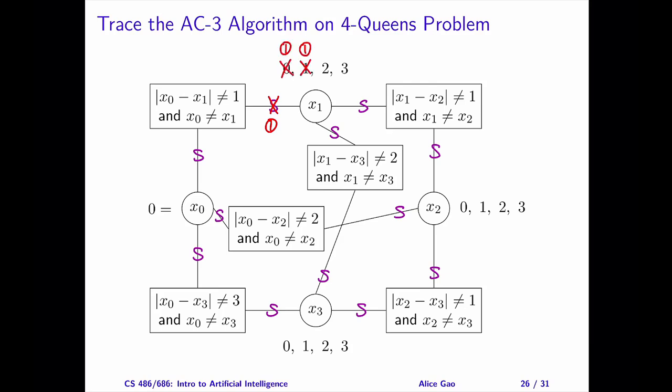We need to remove 0 and 1 from the domain of x1. Since we reduced the domain of x1, do we need to add any arcs back to the set S? There are three candidates: the arc between x0 and x1, the arc between x1 and x2, and the arc between x1 and x3. Due to the edge case, we do not add back the arc between x0 and x1, where x0 is the primary variable. We should add the other arcs back to S. However, they are in S already, and S is a set with no duplicates, so we do not need to add them again.